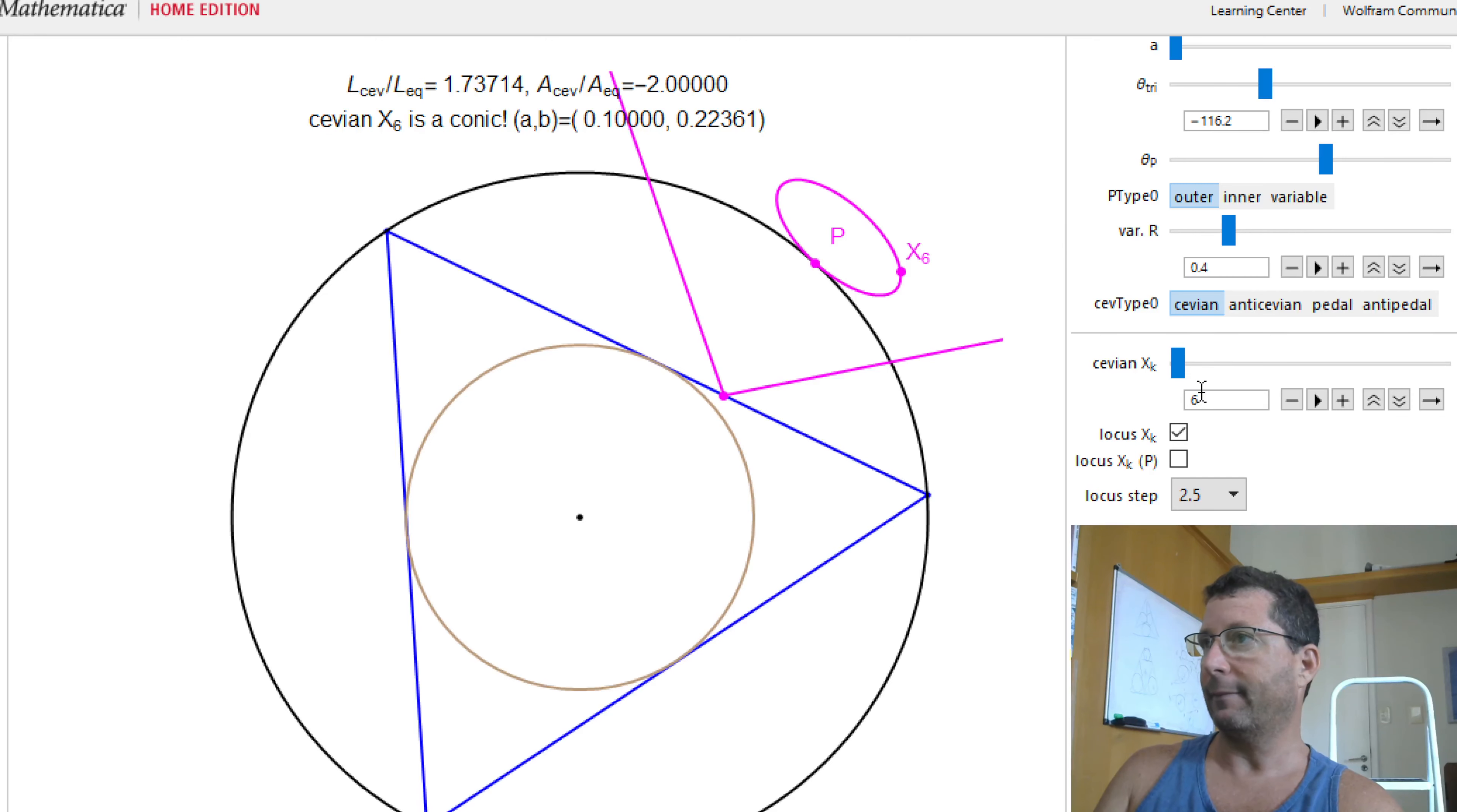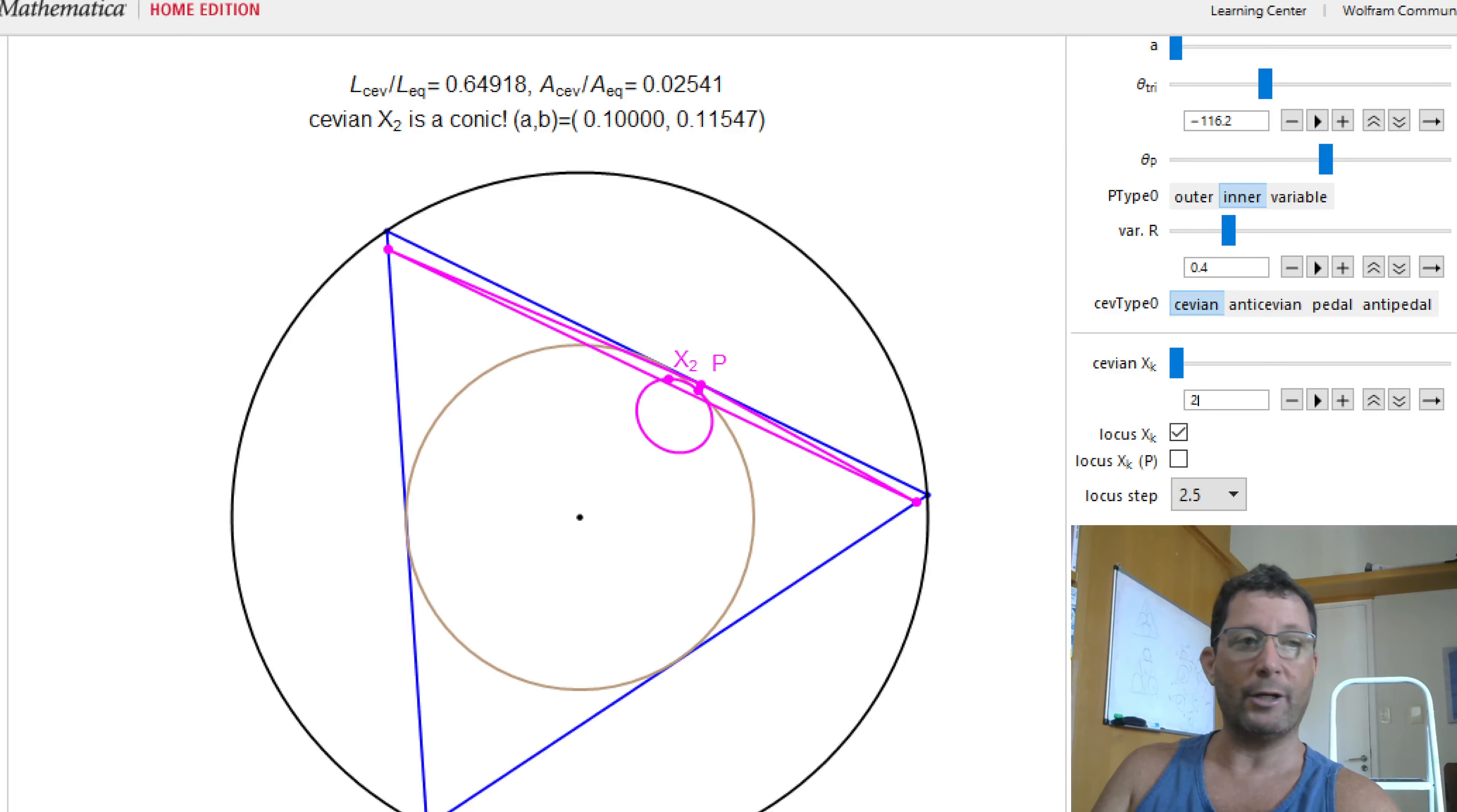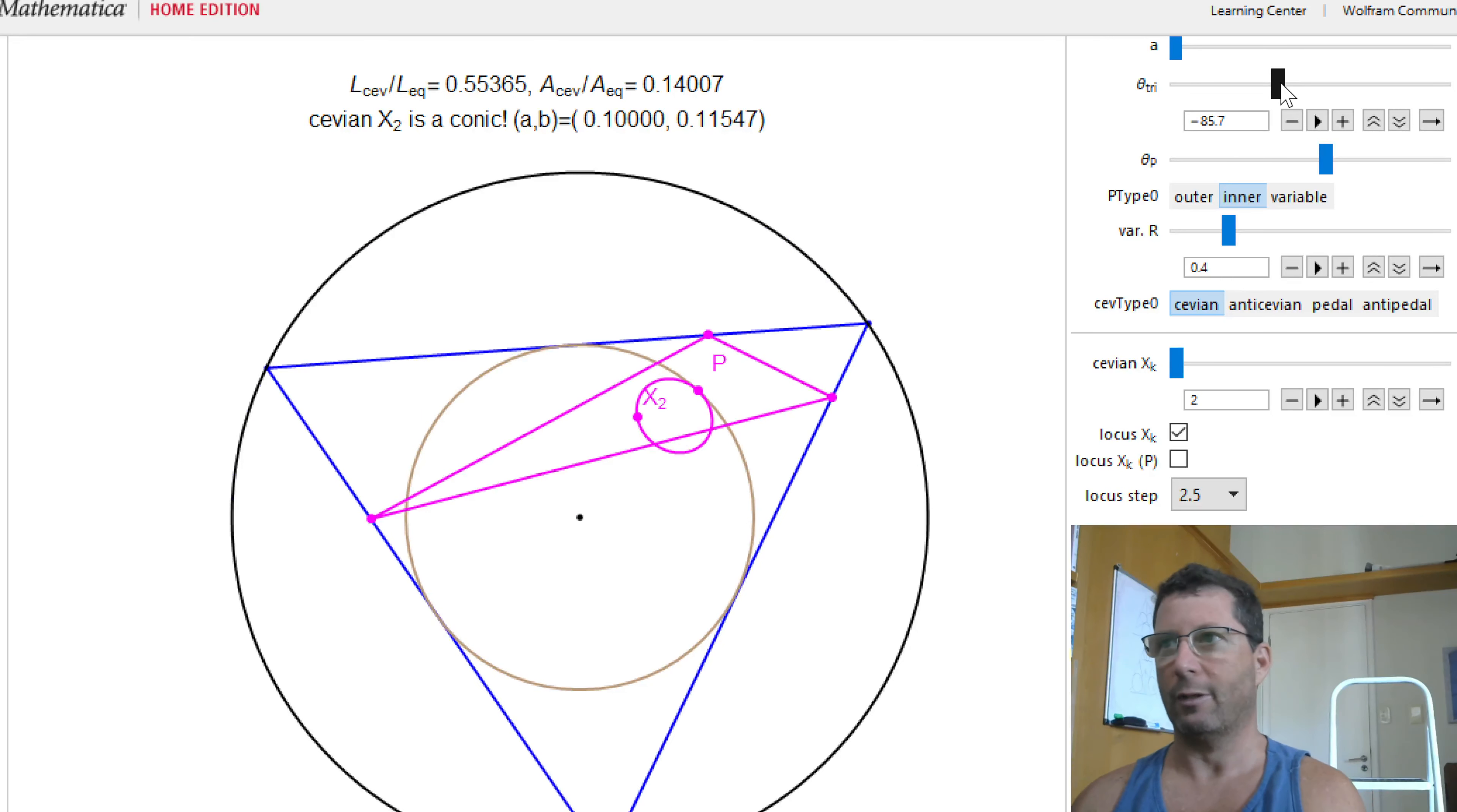If I now switch P to the inner conic, I'm getting this phenomenon, strangely, with X2. I'm getting this sort of conic where one of the semi-axis is one-tenth of the circum radius. Why is that? No idea. Probably a good algebraic calculation might reveal why that is. What is the connection between X2 and X6? We know they are an isogonal pair. Is there any sort of isogonality transformation being computed by the Cevian triangle? These are fair questions.